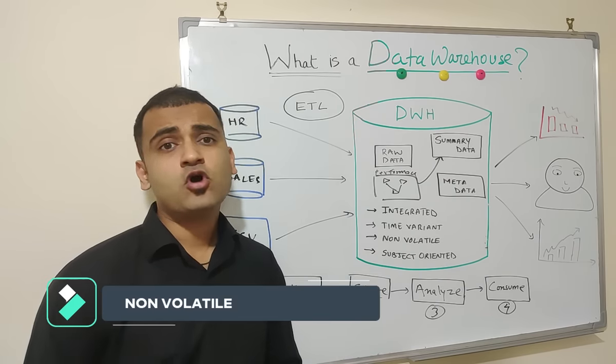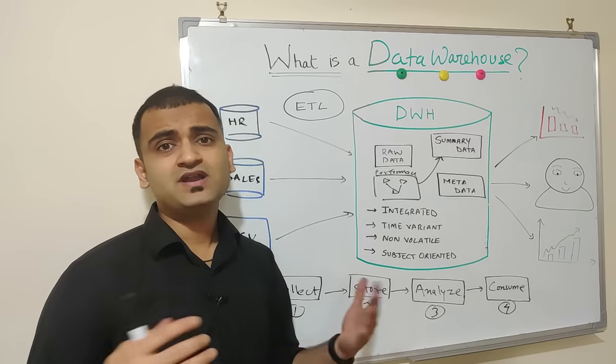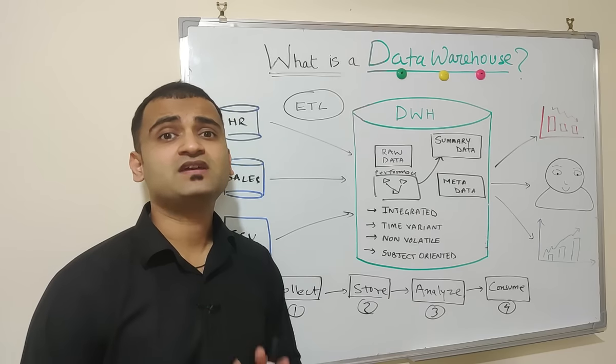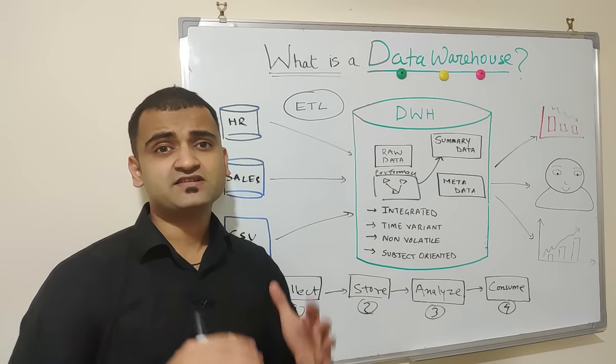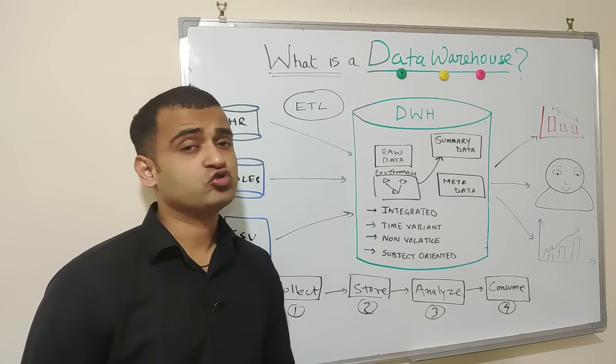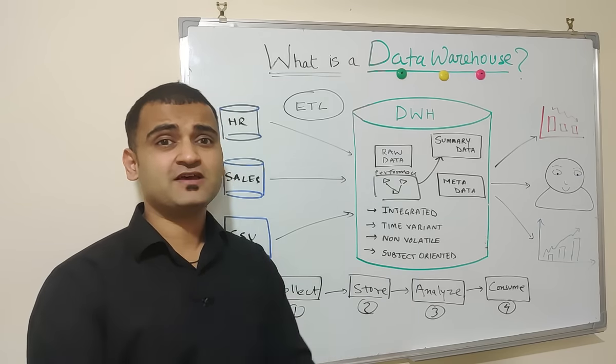Third is non-volatile. Non-volatile means that whatever data comes into a data warehouse remains static. It does not change. Whenever you have a change, there is a separate mechanism to store that change into a data warehouse. But once a data enters into a data warehouse, it stays there forever.